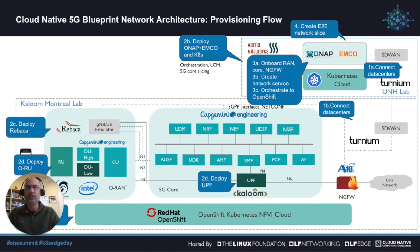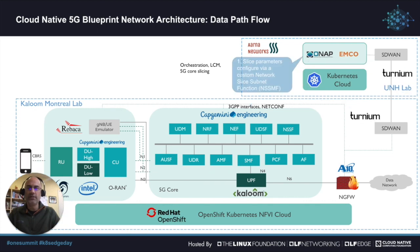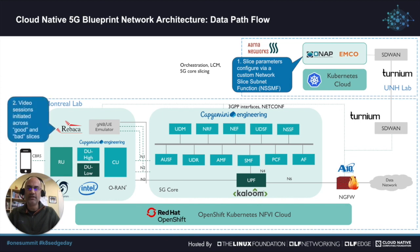Next we'll see how the network slice works from a data plane point of view. First we created the slice in ONAP as just mentioned. We did some custom development for this project. We developed a component called the Network Slice Subnet Management Function, NSSMF, that goes between ONAP and the 5G core. The NSSMF passed on the parameters to the 5G core.